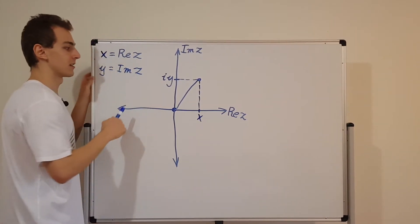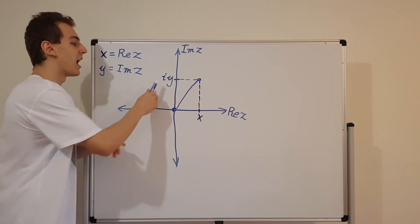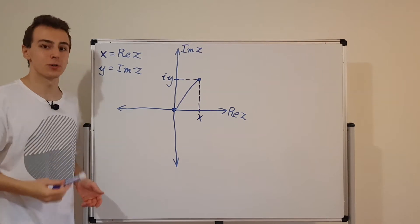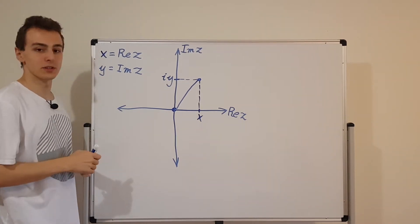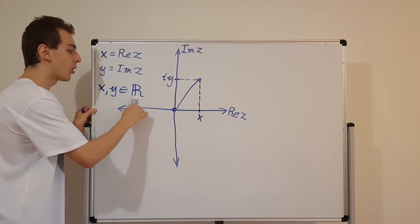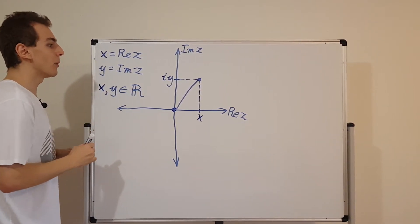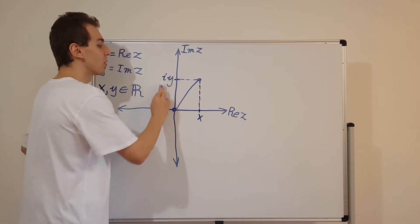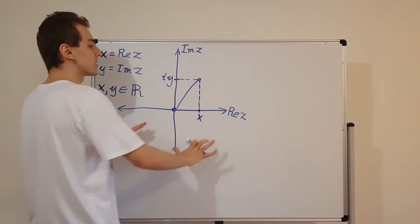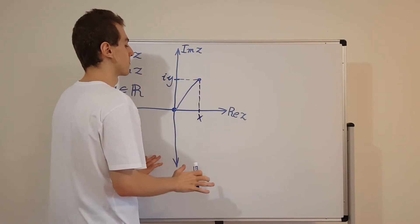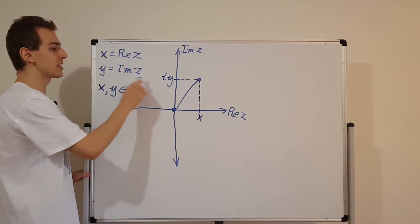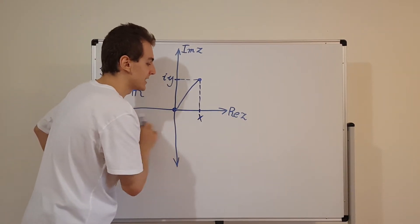Here's an important convention: i times y is not the imaginary component. i is the imaginary unit, and y is the imaginary component. So y by itself is the imaginary component, and y is a real number. Both x and y are real numbers — they are both elements of the real numbers. We're using the imaginary unit i to multiply the imaginary component. The imaginary numbers exist on this vertical axis, and all complex numbers have some combination of real and imaginary components. The real numbers are a special case of complex numbers — they are the complex numbers that have an imaginary component of 0. If you set y equal to 0, you just lie on the real axis, the horizontal axis.